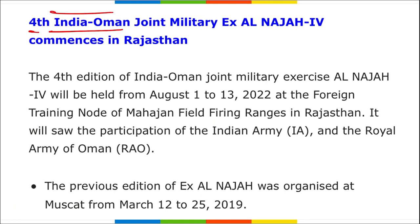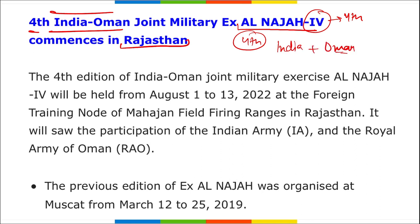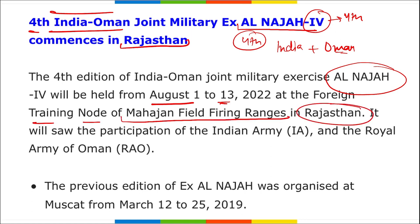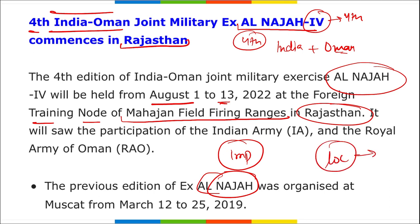The Fourth India-Oman Joint Military Exercise by the name Al-Najah was held from 1st to 13th August at the Foreign Training Node of Mahajan Field Firing Range in Rajasthan. Al-Najah is an exercise conducted between India and Oman. Since it is held in Rajasthan, remember this is an army exercise between the armies of the two countries.